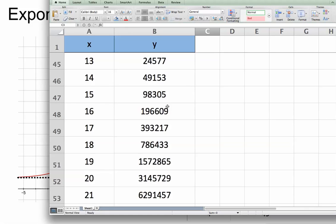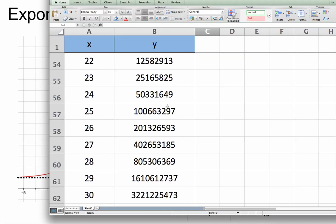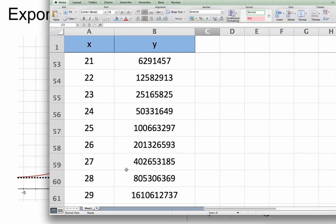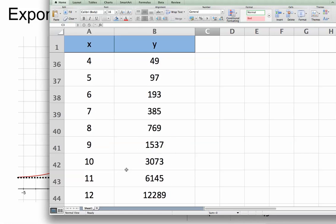Let's see what happens if we go all the way to 30 to get a feeling for how rapidly the value increases. I've got 3 billion, 221,225,473 for an x value of 30. So it increases rapidly, exponentially, as is technically correct.